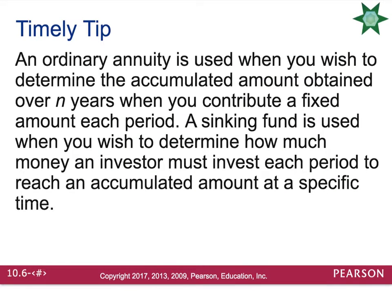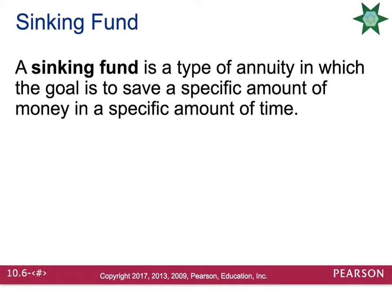A timely tip: an ordinary annuity is used when you wish to determine the accumulated amount obtained over N years when you are contributing a fixed amount each period. A sinking fund is used when you wish to determine how much money an investor must invest each period to reach an accumulated amount at a specific time. A sinking fund is a type of annuity in which the goal is to save a specific amount of money in a specific amount of time.